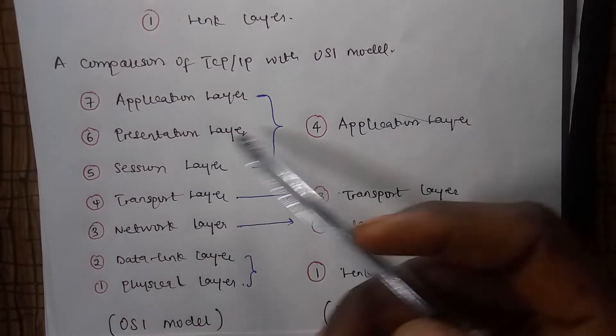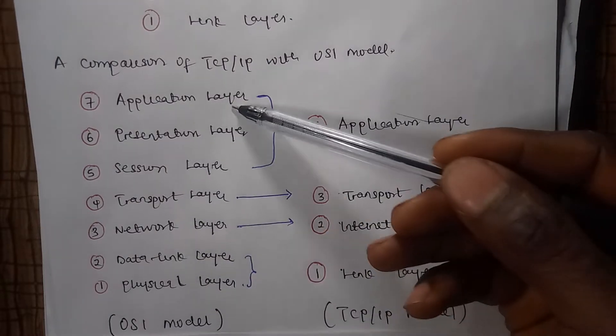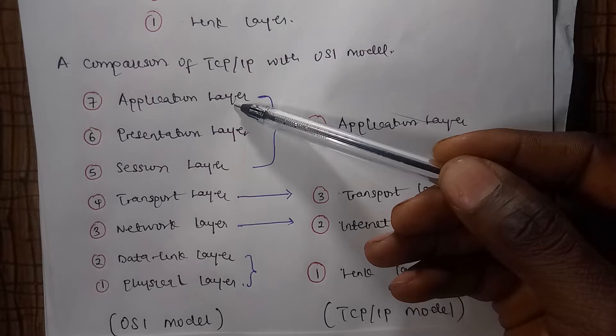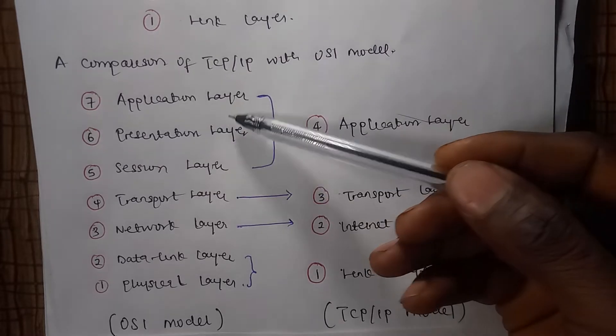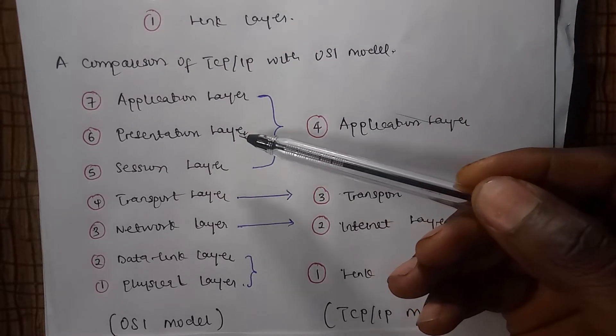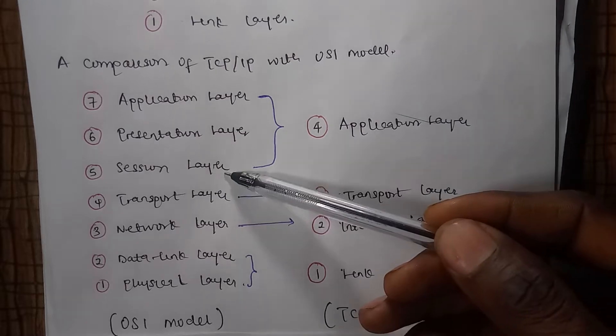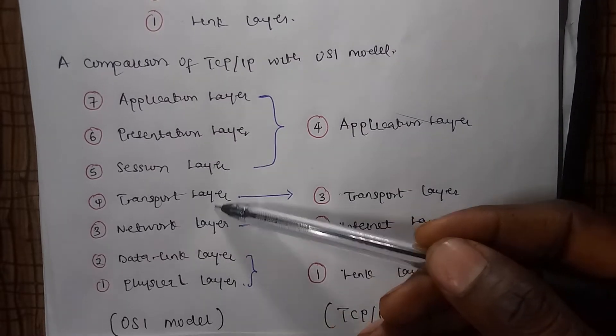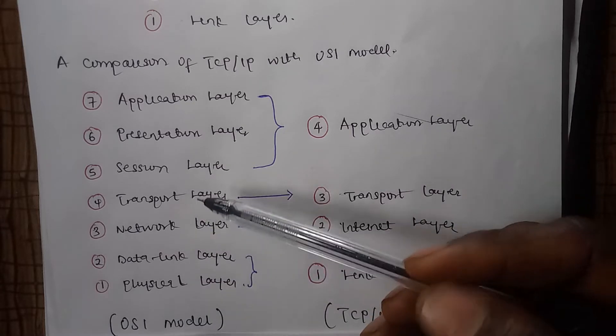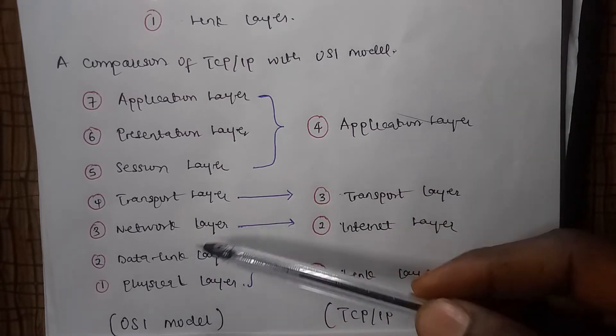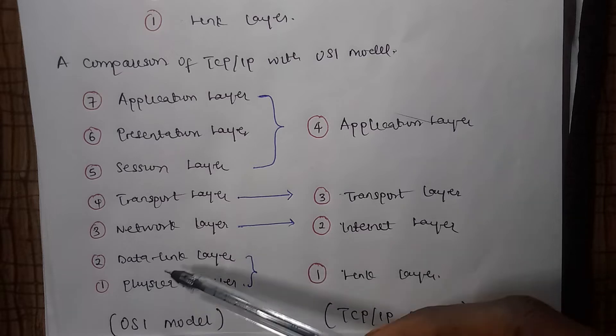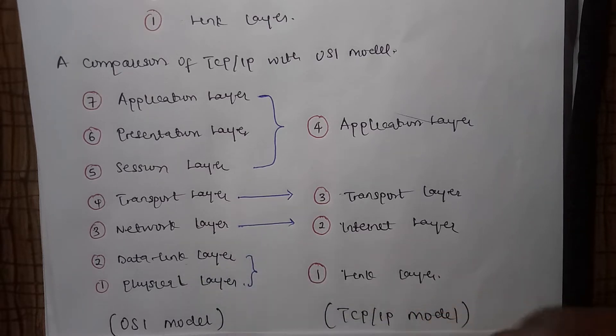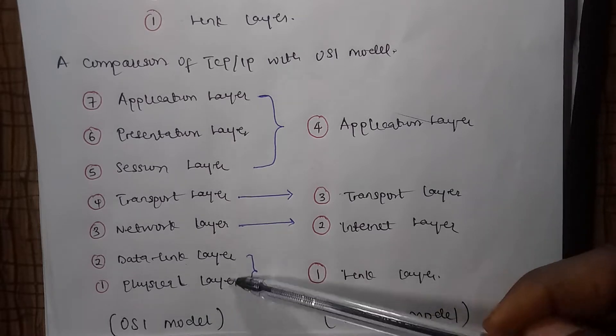As you can see in the OSI model, we have the seven layers. The application layer communicates with the end user. The presentation layer translates. The session layer is responsible for terminating and setting up sessions. Transport layer is responsible for delivering packets. Network layer is responsible for routing and addressing packets. Data link layer is responsible for packing bits into frames. And the physical layer is responsible for conveying bits.